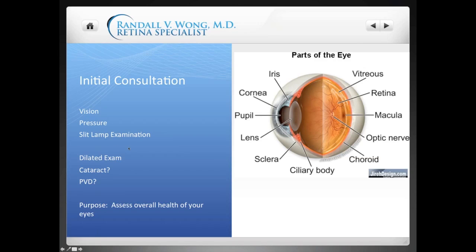That's the purpose of the slit lamp examination and the dilated exam — when you put drops in your eyes so your pupils dilate and we can look into the inside structures of your eyes, including the vitreous. Particularly germane to this patient population, we're very sensitive about whether or not you have a cataract. I want to make sure you do not have a cataract, or if you do, that you're aware of it. Remember that as we age, everyone will eventually develop a cataract. For patients where I may consider operating, I also want to know whether or not there is a posterior vitreous detachment, because this will help me counsel you better about the whole course of the vitrectomy.